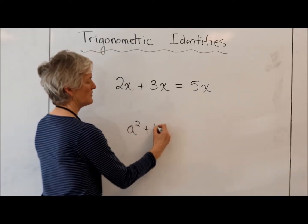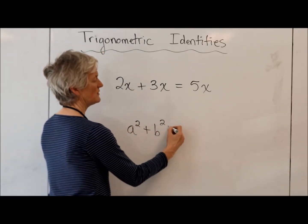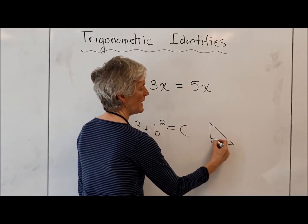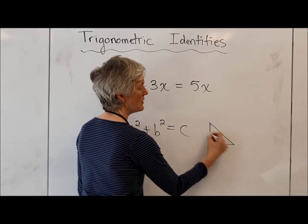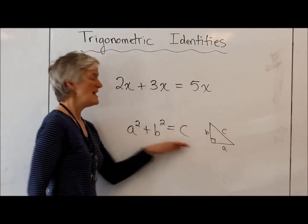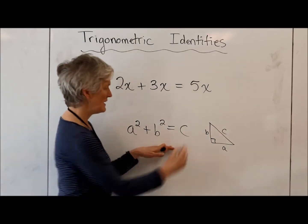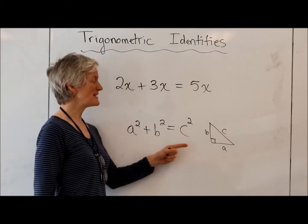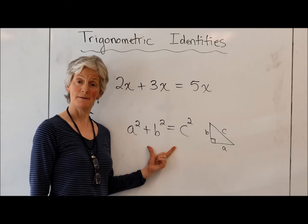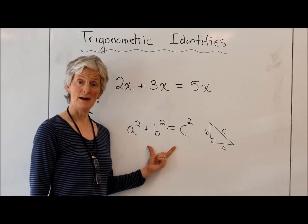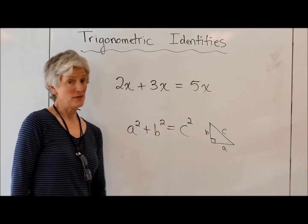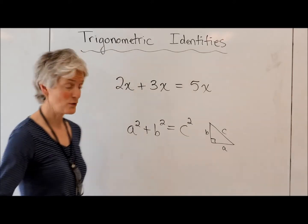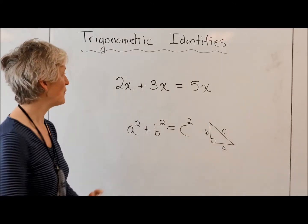A squared plus b squared equals c squared in a right triangle where a and b are the legs and c is the hypotenuse. This is something that is always true. I could prove that these are true. There are many proofs that this is true, so I won't go there.